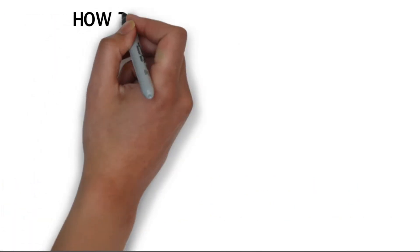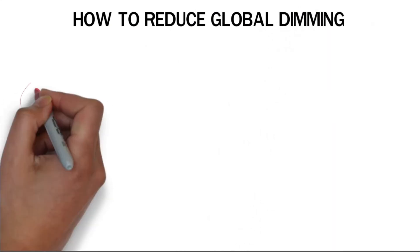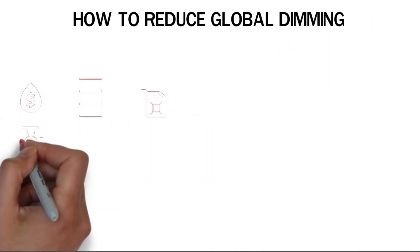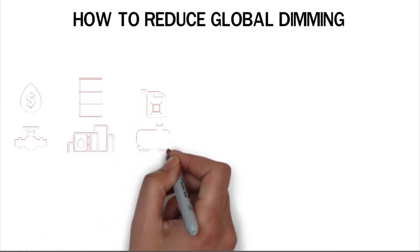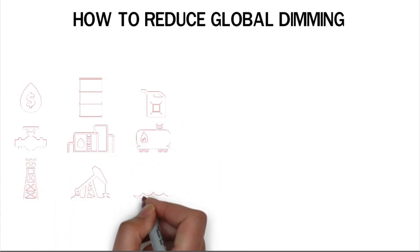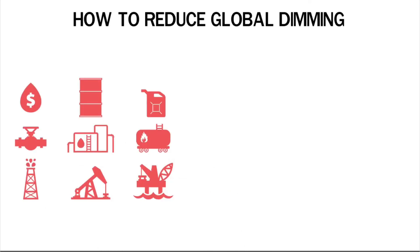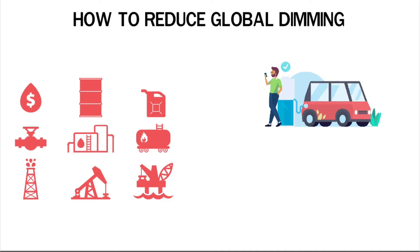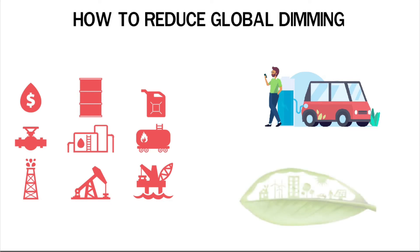How to reduce global dimming. Reducing pollution is the best way to cut down on global dimming. Using fossil fuels is bad for the environment. They put greenhouse gases and aerosols into the air, which can damage the climate. Gas-powered vehicles should be replaced with electric vehicles to minimize the emission of particulates. It is better for the environment if people use renewable energy sources. Solar panels and windmills can make electricity without causing as much air pollution.